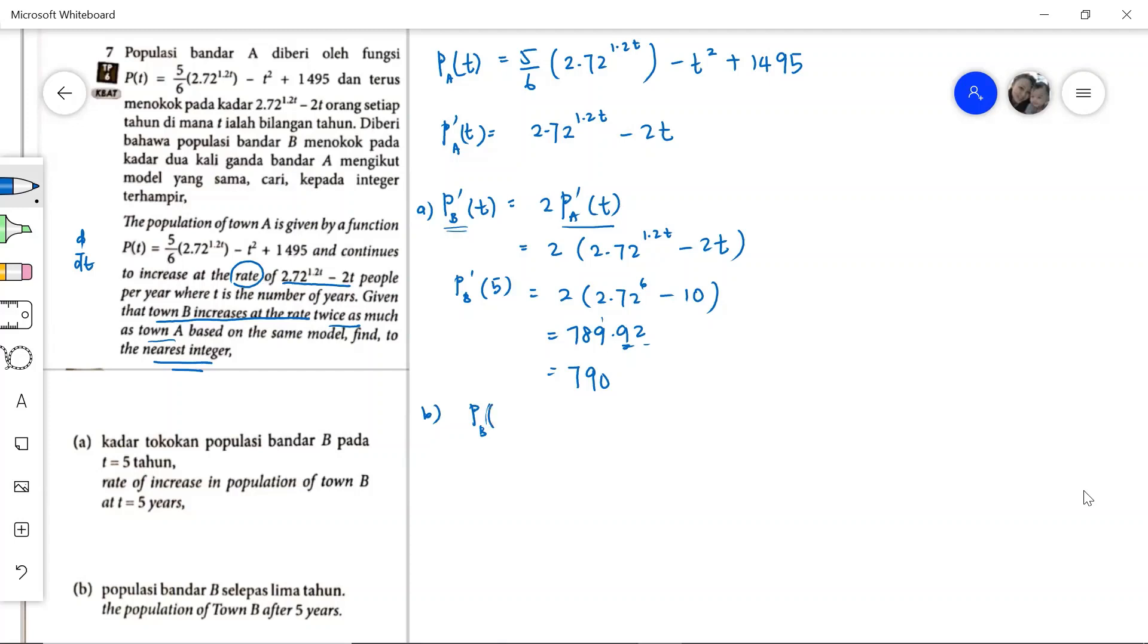The population of town B will be the integration of the rate of increase of population with respect to T. Because differentiation and integration neutralize each other, you get back your population.